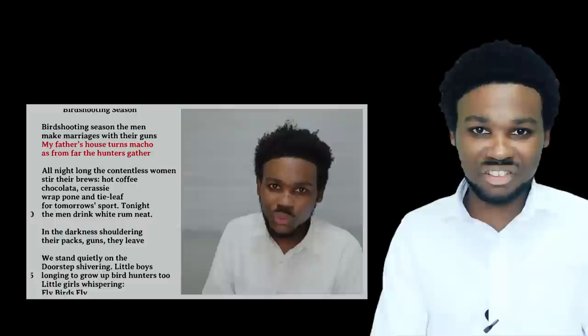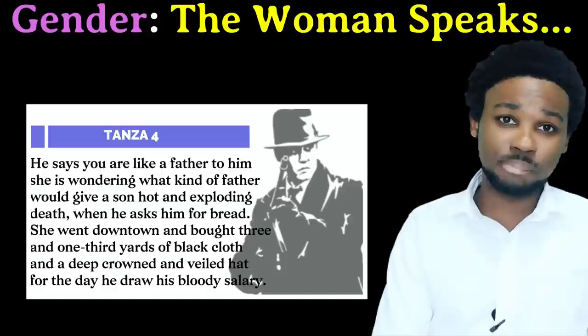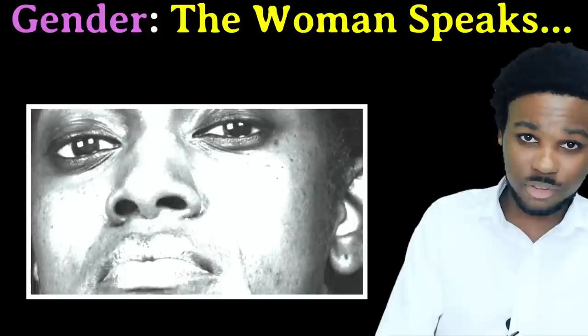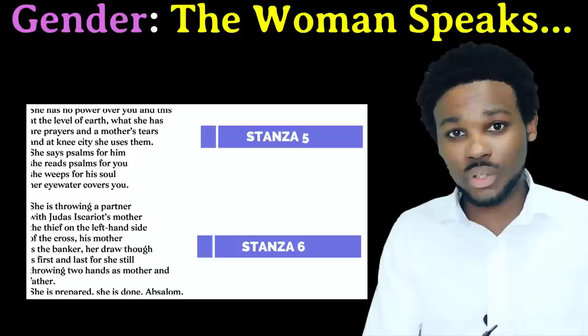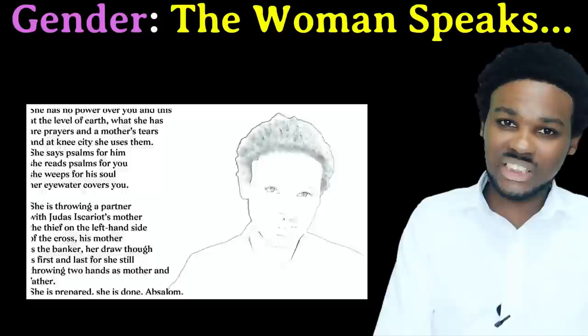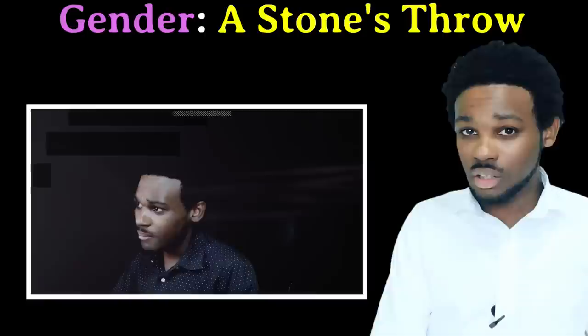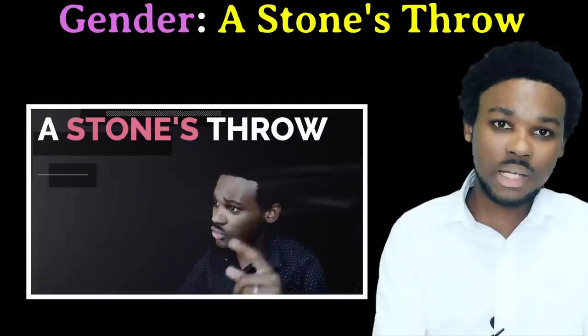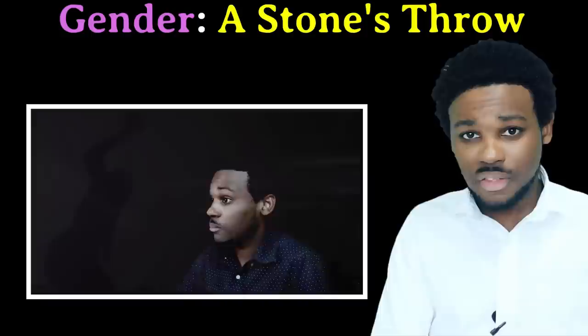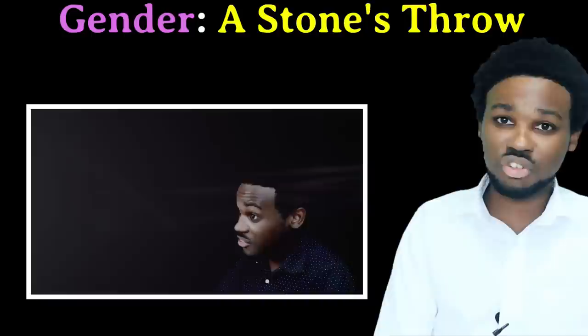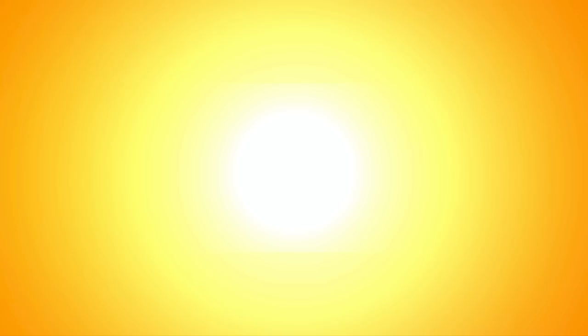In The Woman Speaks to the Man Who Has Employed Her Son, the mother is powerless to get her son on the right track. The man who has employed her son has power in the poem, as does her son, who has the ability to walk away from a life of crime. While it isn't directly stated, the poem does suggest that some of the woman's powerlessness stems from the fact that she's a woman. A Stone's Throw is another gender poem on the syllabus, where we see not just prejudice against women, but straight-up abuse of a woman — gang violence and the threat of murder. The men in the poem judge the woman harshly for committing a sin that many of them have also committed. The men have all the power, while the woman is at their mercy.